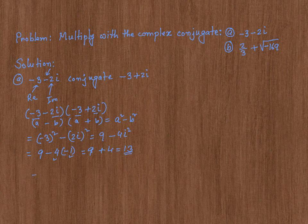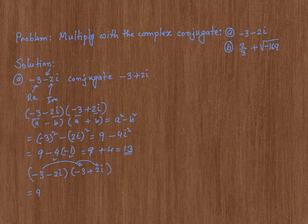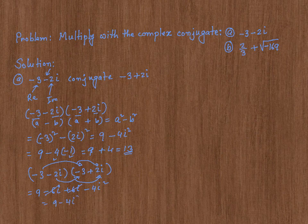Or, if you didn't want to do it that way, you could take the complex number and its conjugate and FOIL using the distributive property. Negative 3 times negative 3 is positive 9. Negative 3 times 2i is negative 6i. Negative 2i times negative 3 is positive 6i. And negative 2i times positive 2i is negative 4i squared. The positive 6i and negative 6i cancel, leaving 9 minus 4i squared, which equals 9 plus 4, giving us 13.